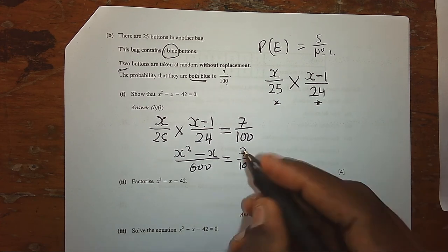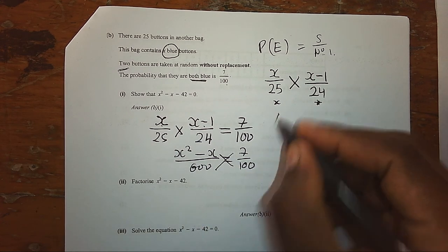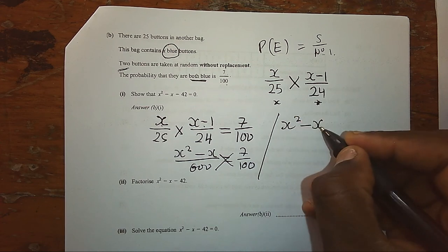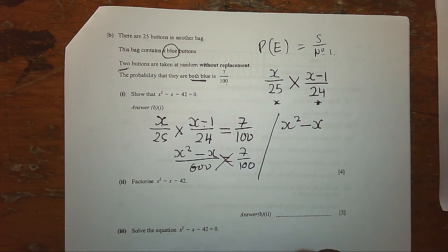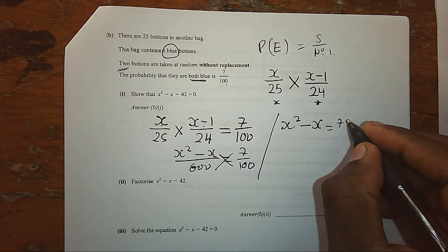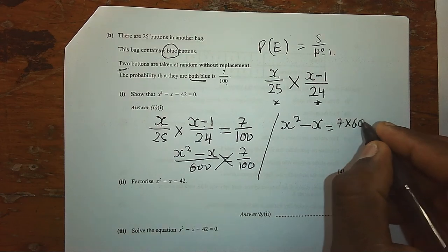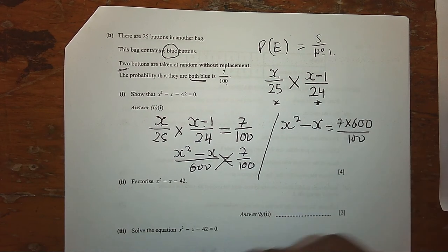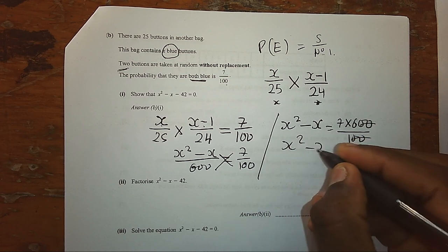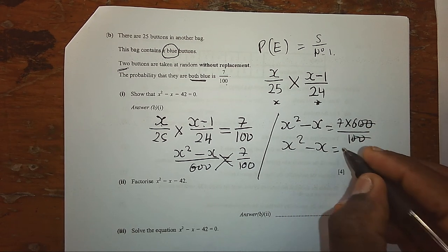We shall cross-multiply. We shall have X² - X. When you have 100 on that side, you can move it on this side so that we can simplify faster. The zeros will cancel. We shall have X² - X is equal to 7 times 6, that is 42.